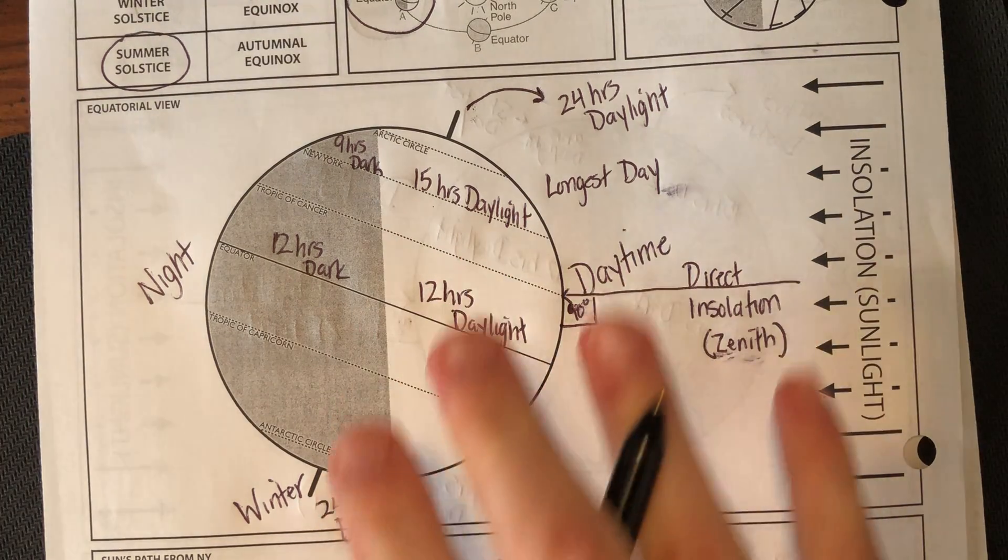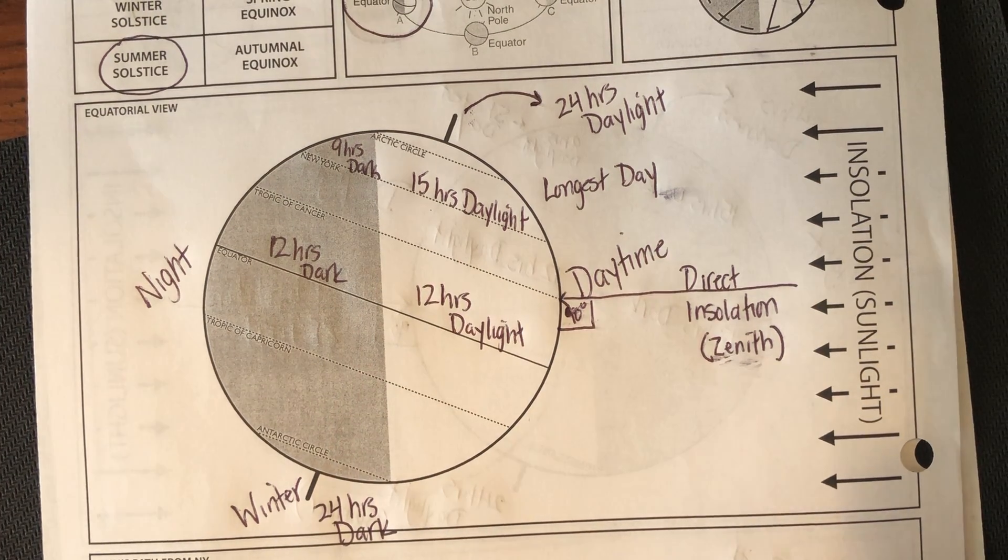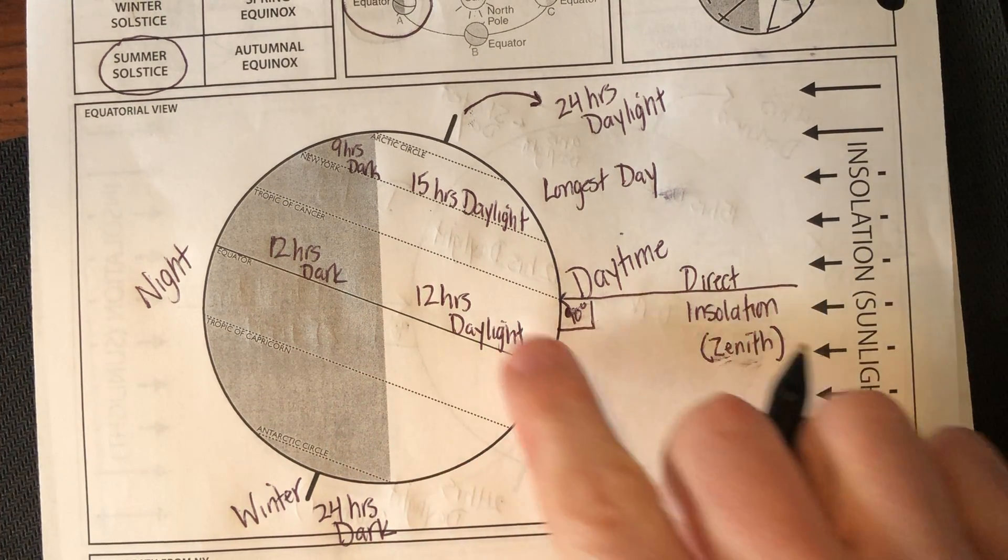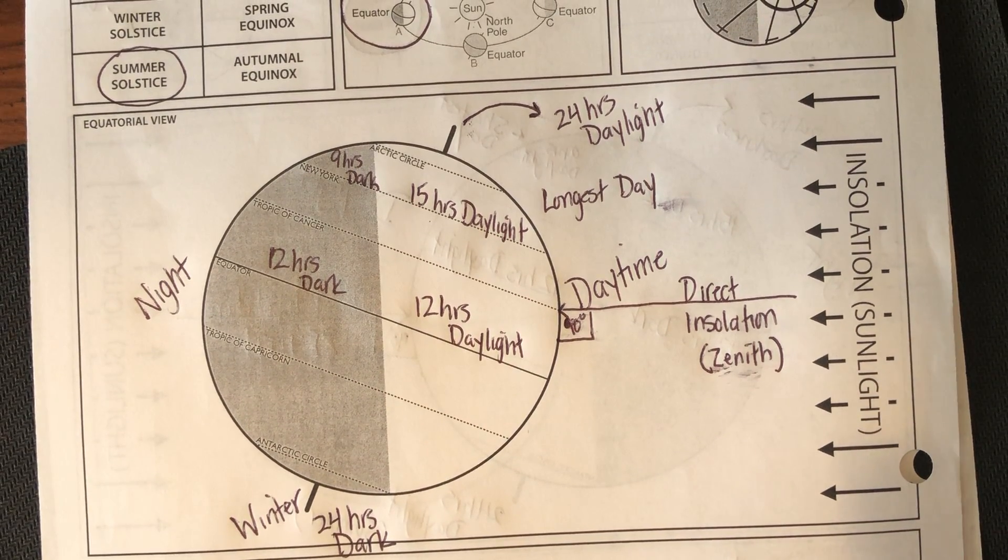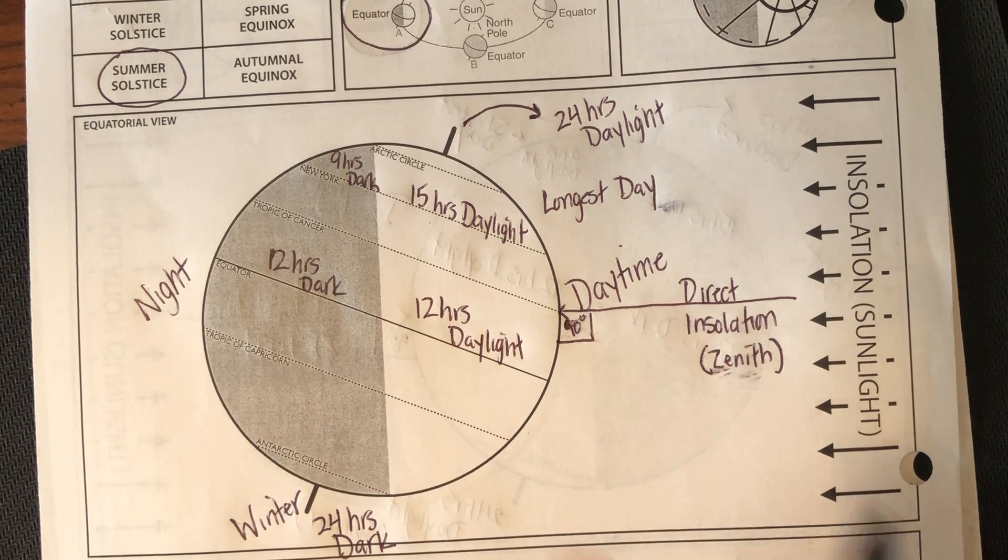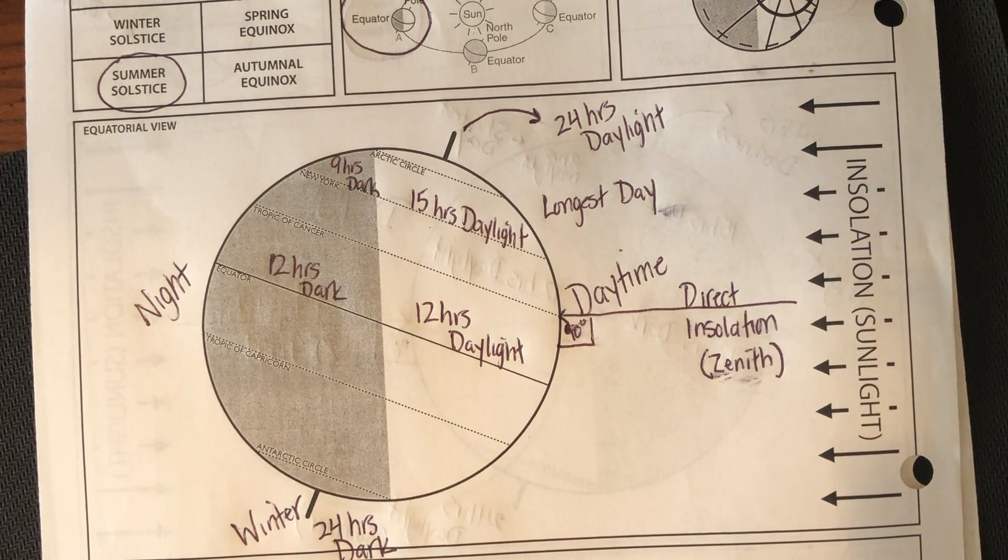I've already touched base on the Antarctic Circle and the South Pole getting 24 hours of darkness. Really important to know your hours of daylight for a lot of these locations, and especially Cancer and Capricorn, knowing that those are going to be the latitudes that get the most direct sun in winter and summer. We'll talk about the equator during spring and fall.